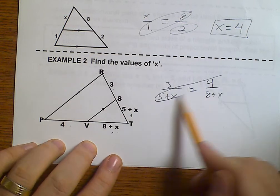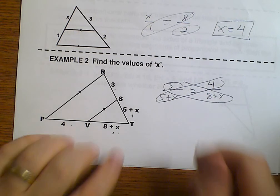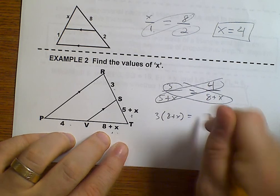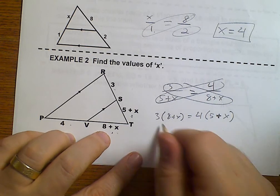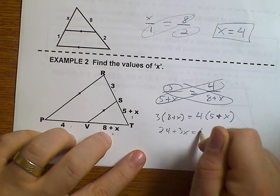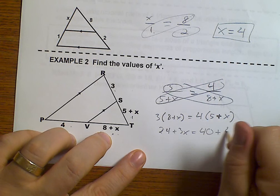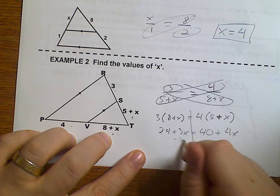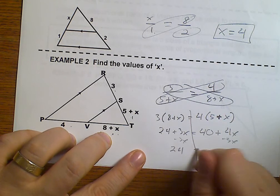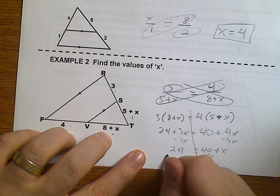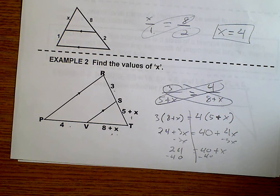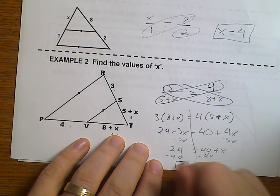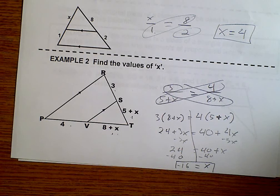Now when we cross multiply, we actually have an algebraic expression. We have 3 times 8 plus X equals 4 times 5 plus X. So we have 24 plus 3X equals 40 plus 4X. Subtract 3X: 24 equals 40 plus X. Subtract 40: 24 minus 40 is negative 16.